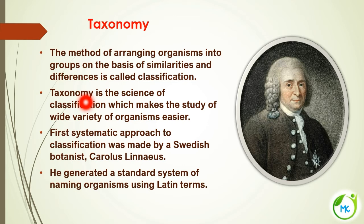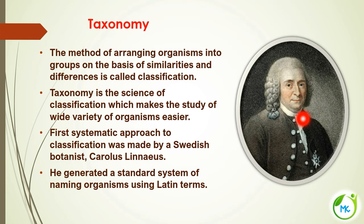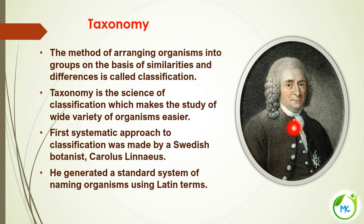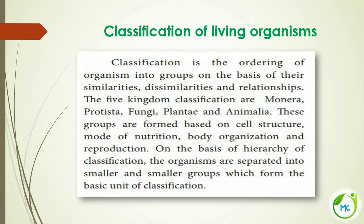Taxonomy is the science of classification. With this science of classification, it makes the study of a wide variety of organisms easier. The first systematic approach for classification was made by a Swedish botanist called Carolus Linnaeus. He also introduced the system of binomial nomenclature — a standard system of naming the organisms using Latin terms. This system of naming organisms using Latin terms is called binomial nomenclature, introduced by Carolus Linnaeus.